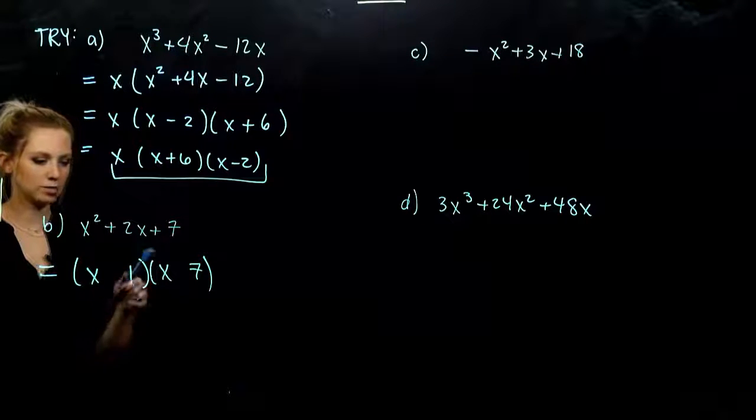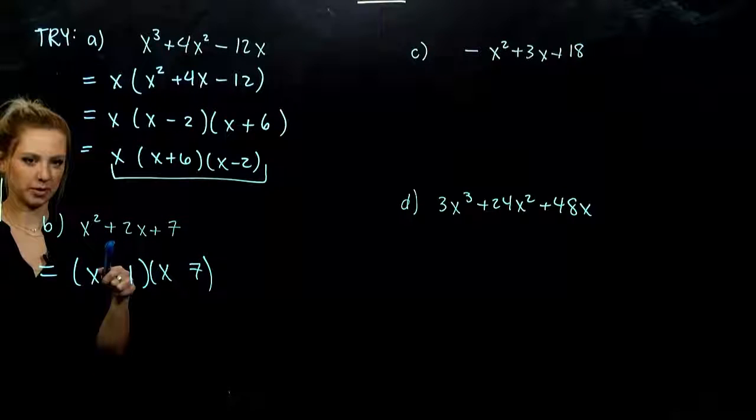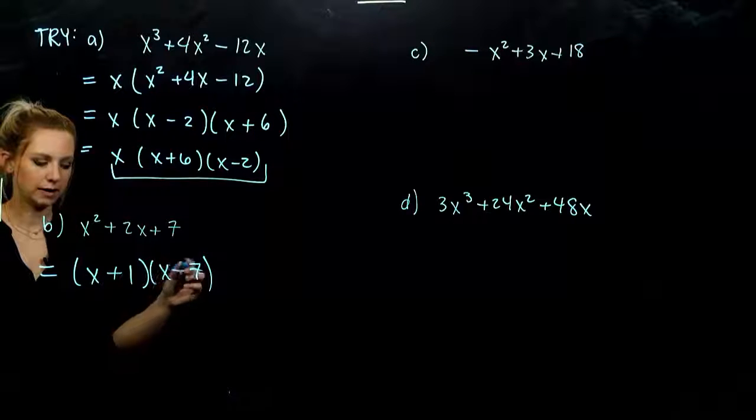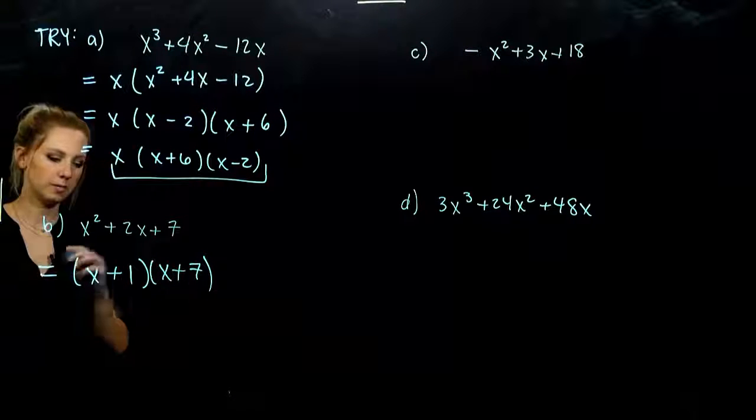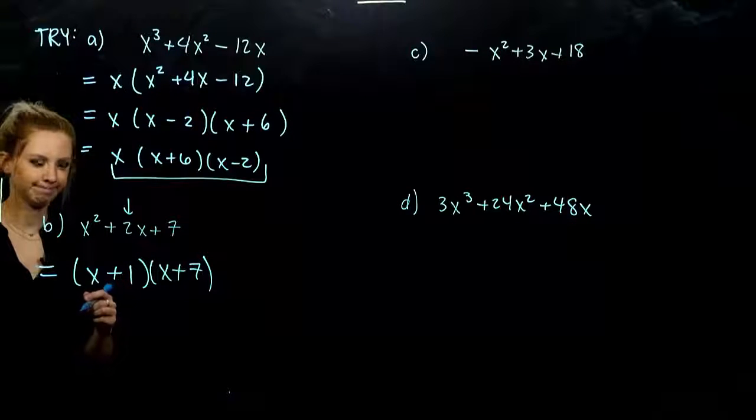And I need it to multiply to be positive, and add to be positive. So that tells me my signs should be positive and positive. But when we FOIL the check, does it give us that middle term that we're looking for? No.